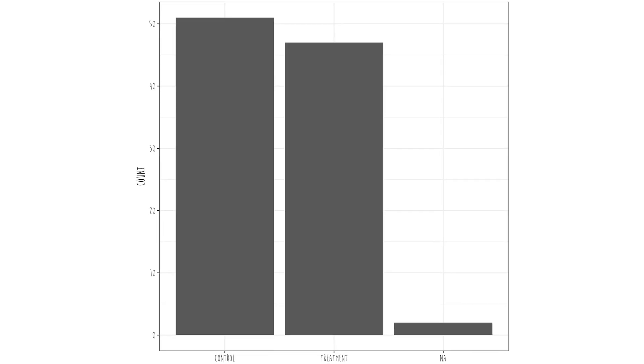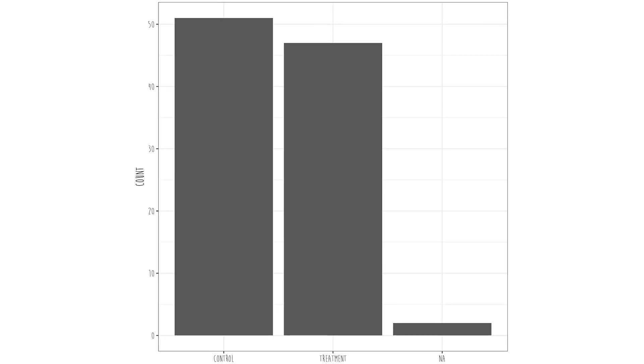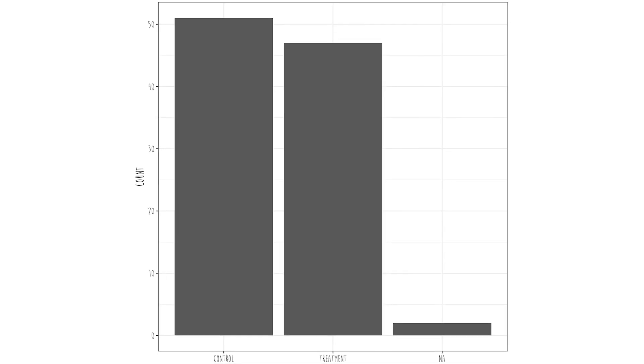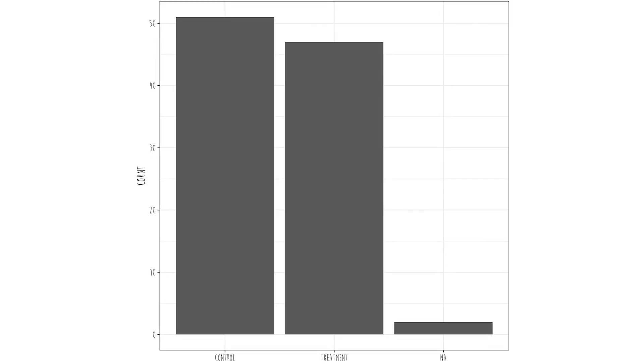Here are the different things we can look out for. One: missing data. In this example, we have a treatment group, a control group, and NA. What does NA mean? That is many statistical programs' native way of conveying that information is missing. In this graph it looks like there are about two or three or four people missing, and that could be problematic. If you want to know why, check out my missing data video in the description below.